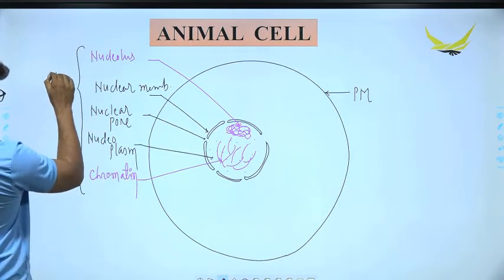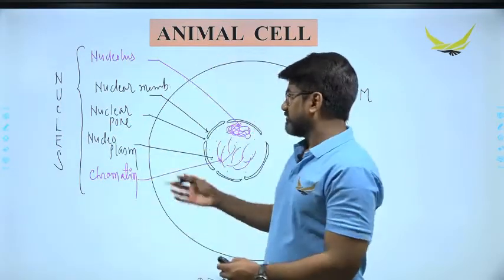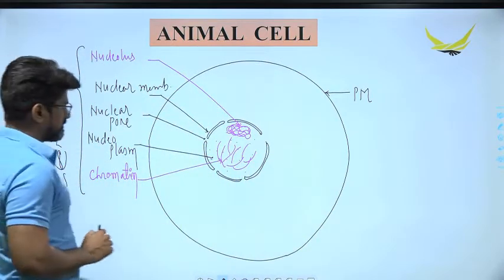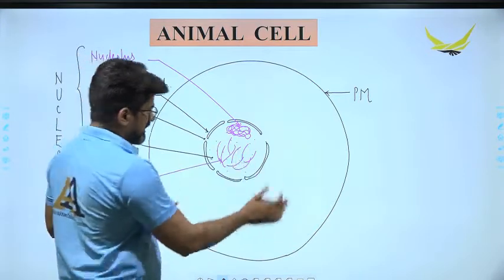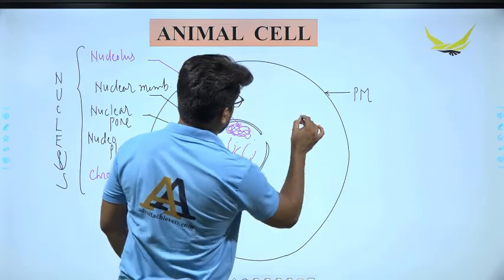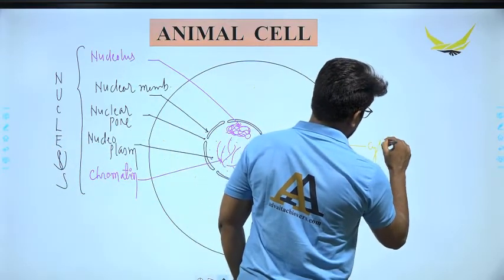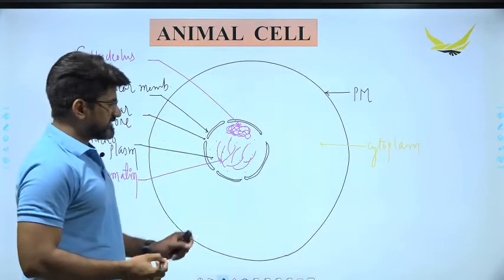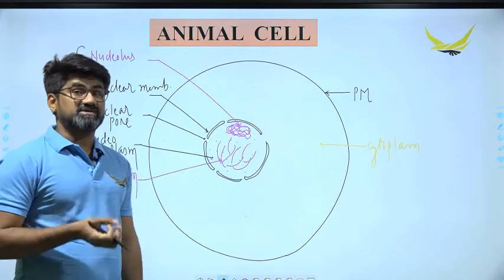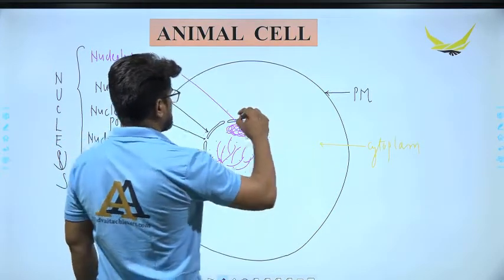Together, all these parts — nuclear membrane, nucleoplasm, chromatin, and nucleolus — form one nucleus. The substance outside the nuclear membrane is the cytoplasm. Inside the cytoplasm, very near to the nuclear membrane, there is an organelle formed by the nuclear membrane itself, and that organelle is the endoplasmic reticulum (ER).